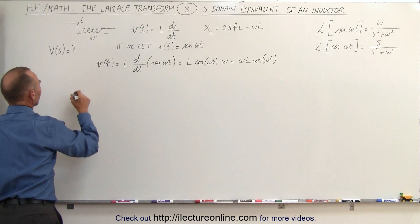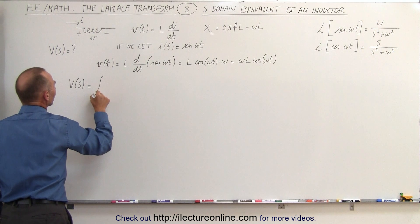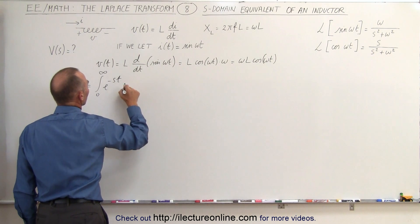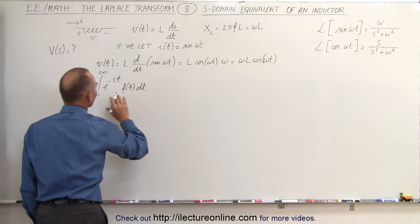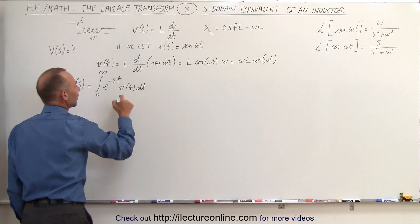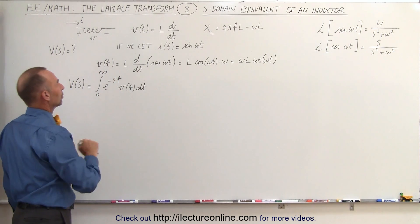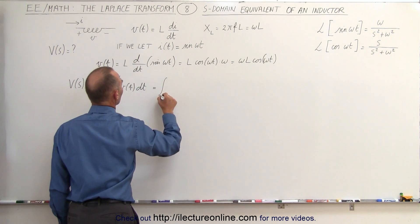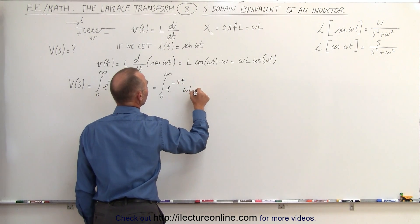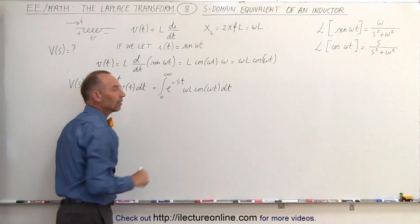We then realize that the Laplace transform would give V(S) equal to the integral from zero to infinity of e^(−st) times V(t) dt. We know that V(t) equals ωL·cos(ωt), so we can write this as the integral from zero to infinity of e^(−st) times ωL·cos(ωt) dt. Since ωL and L are constants, we can take those outside the integral sign.